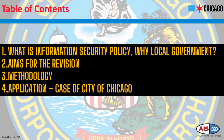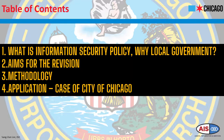Today, I will start by exploring what information security policy is and the peculiarities that make the local government different from other types of organizations. Second, I will go through the aims and goals for the revision of the policy from the local government perspective. Third, I will propose the methodology of the revision and the actual application based on the case study of the City of Chicago.